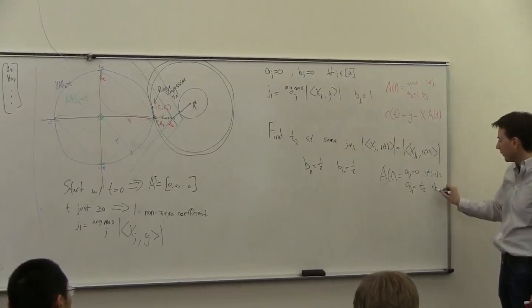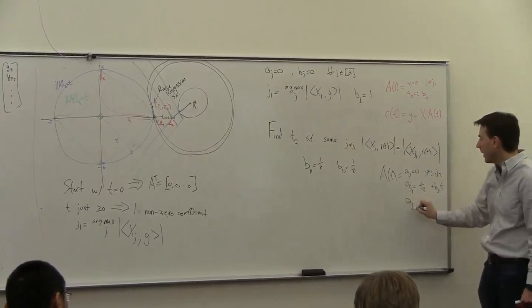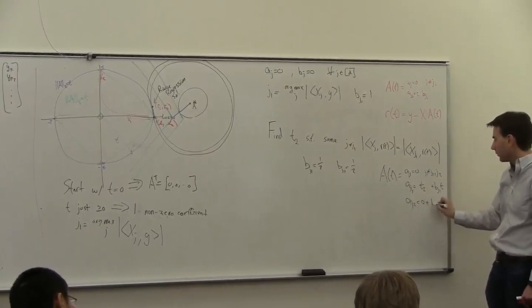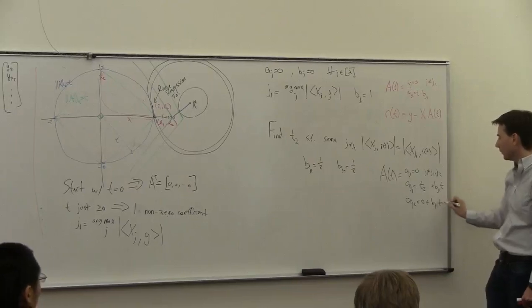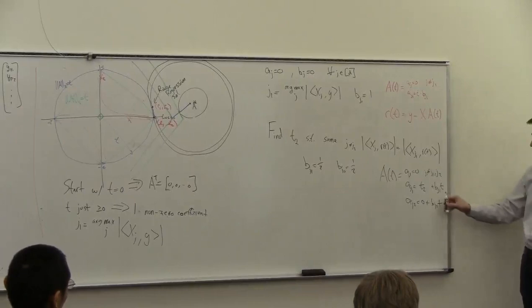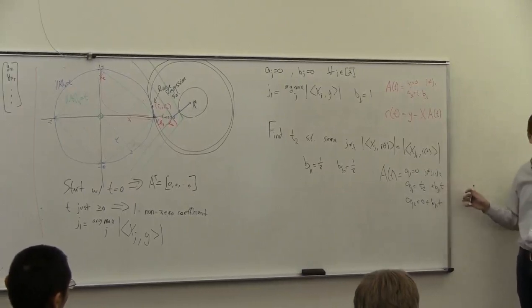plus bj1 of t and aj2 started out as zero plus bj2 of t, so now they're both moving forward together. Now as I increase t beyond this, both of these are increasing.